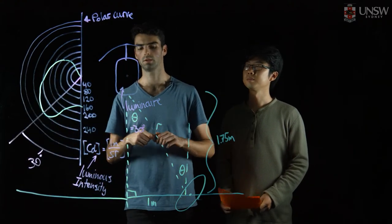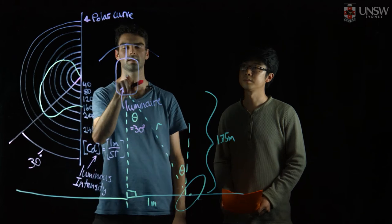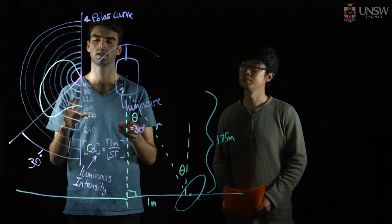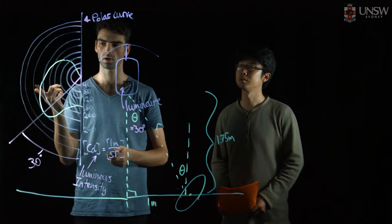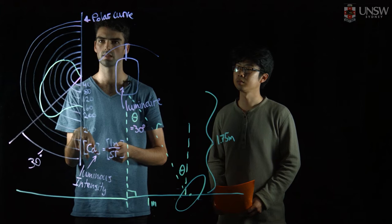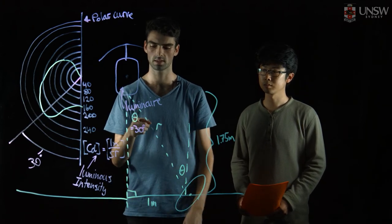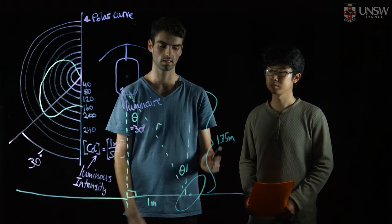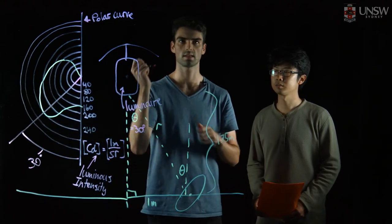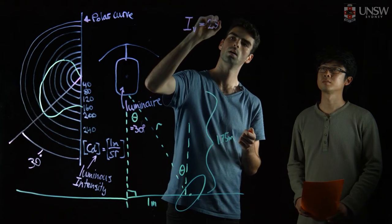So to answer the question of what the illuminance is on this particular surface at a particular point, we first have to look at the luminaire. Every single luminaire is different in terms of the luminous intensity it gives out per angle. For this particular luminaire, that's described by this polar curve, which gives per angle the particular luminous intensity in candelas. Our particular problem deals with a point that is 30 degrees — one metre and 1.75 metres high away from our point source — giving a luminous intensity of approximately 230 candelas.